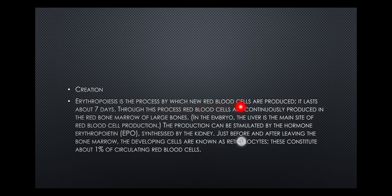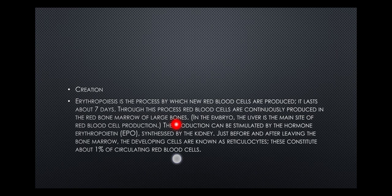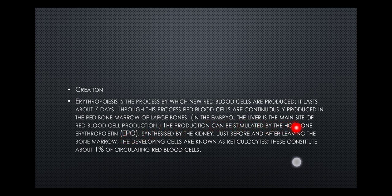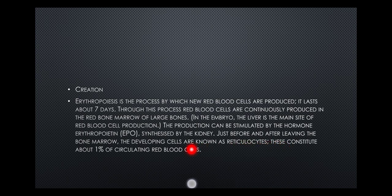Erythropoiesis is the process by which new red blood cells are produced — it takes about seven days from incubation to maturity. Through this process, red blood cells are continuously produced in the bone marrow of large bones. In the embryo, the liver is the main site of red blood cell production. This production can be stimulated by the hormone erythropoietin, which is released more at higher altitudes. Just before and after leaving the bone marrow, the developing cells are known as reticulocytes, and these constitute about one percent of circulating red blood cells.